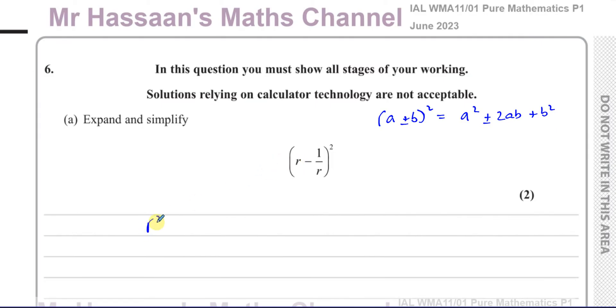So we take the R, we square it, we've got a minus sign, put minus, two times the product of these two terms. So two times R times one over R, and then always the last one will be positive, and you square that one over R. So if you simplify that, that's going to be R squared minus, now the R's cancelled out, so you've got minus two, plus one over R squared. And there's the answer, simple as that. 6A done.